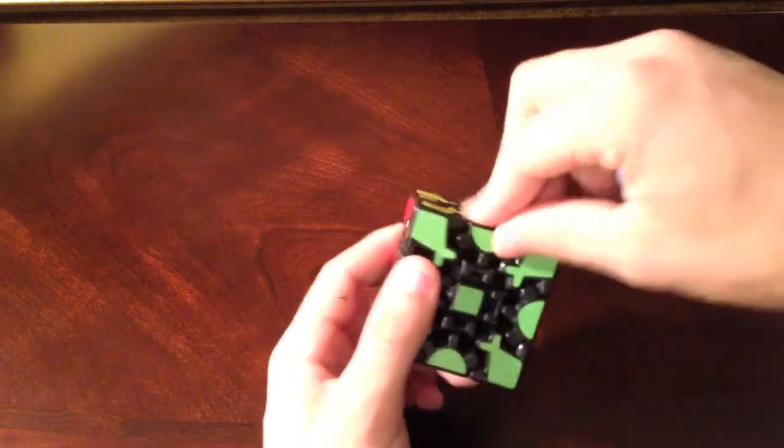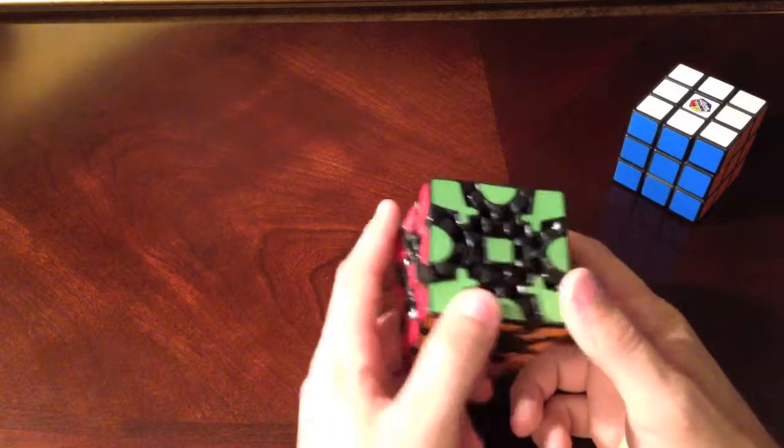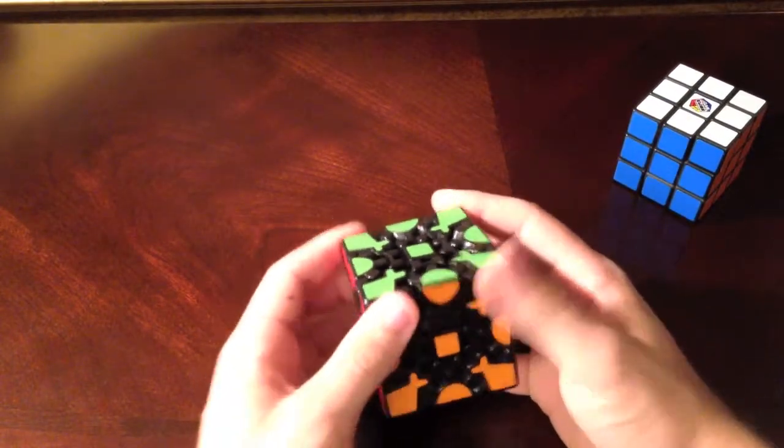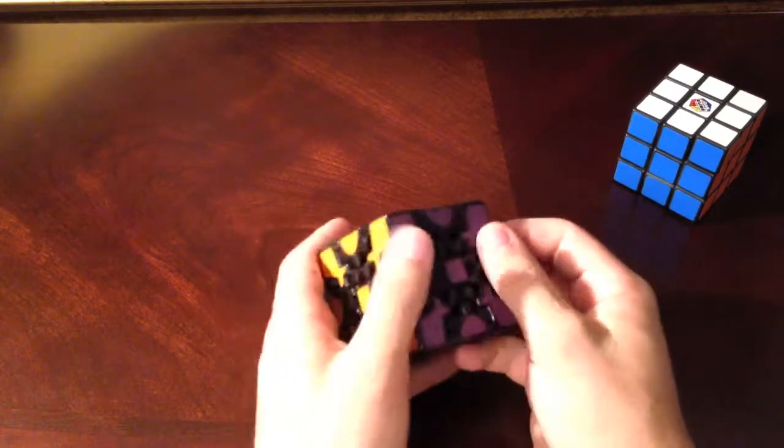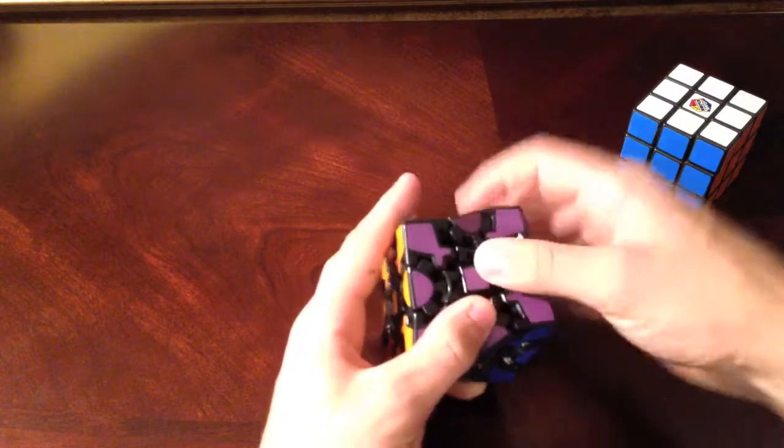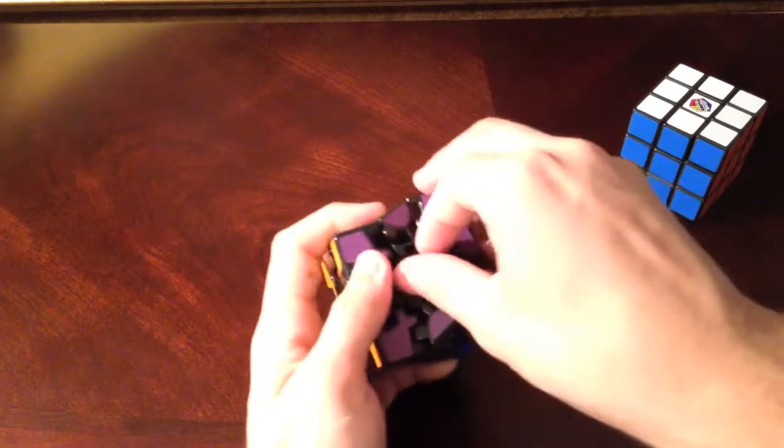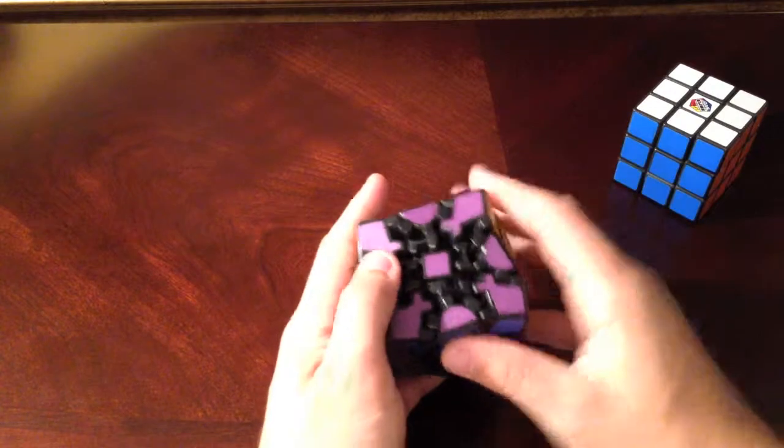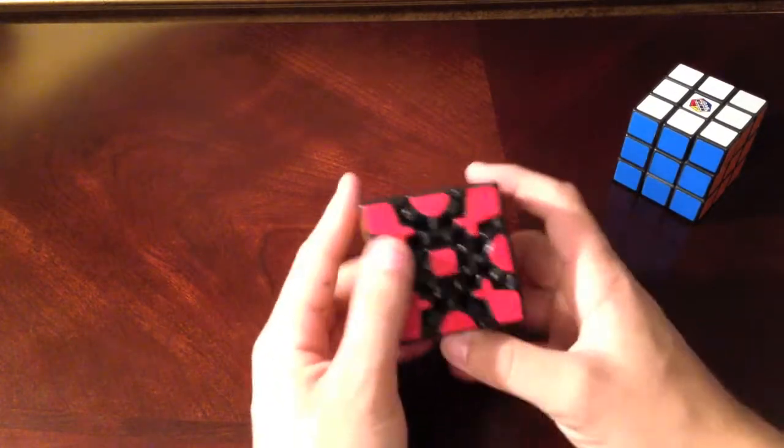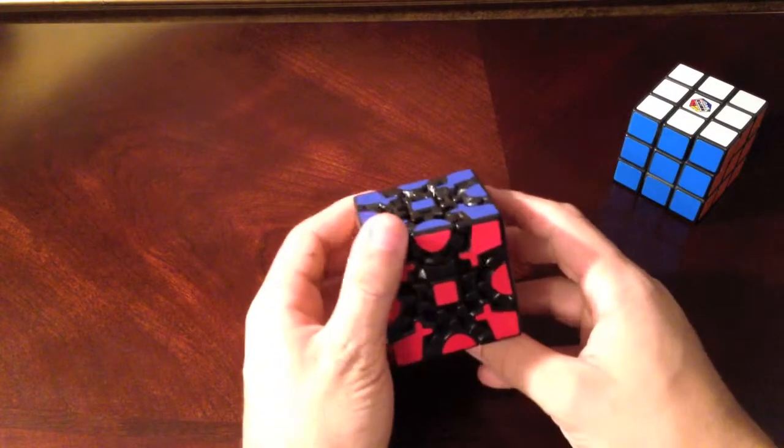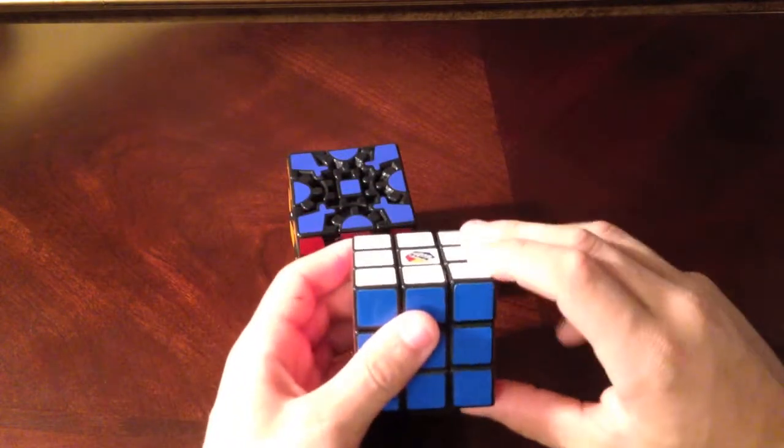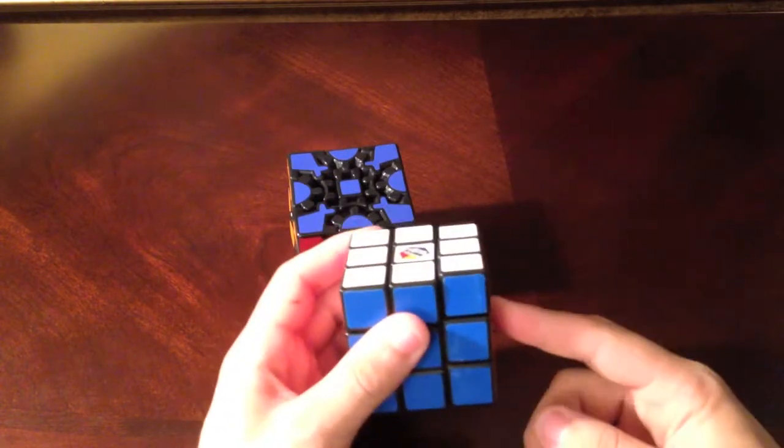But besides that, it's really sturdy. I mean, never had a piece pop out. It's loose. You can't really tighten it more with screws, or at least I never figured it out. But yeah, it's a pretty cool puzzle. Let me show you something amazing. What you would think is on this cube, if you take a face and you do 360 degrees, it comes back where it's supposed to be.